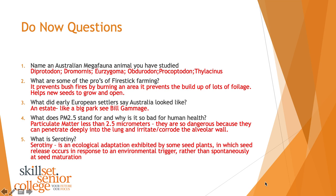What are some of the pros or benefits of fire stick farming? Well, it prevents bushfires by burning an area and prevents the build-up of lots of foliage and undergrowth. They're also good because they help seeds to grow and open — we discussed some plants that actually require fire as part of their life history to be able to grow.